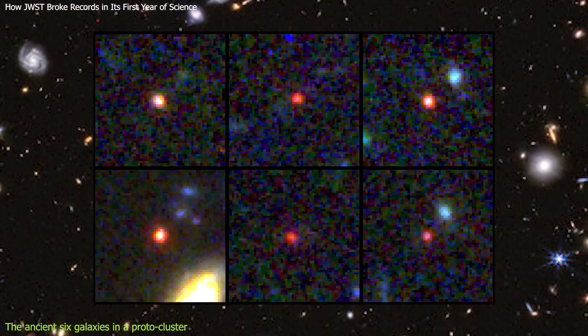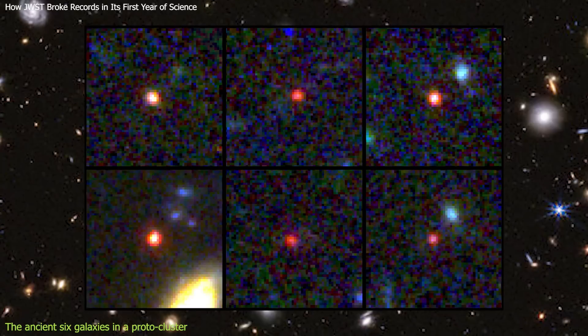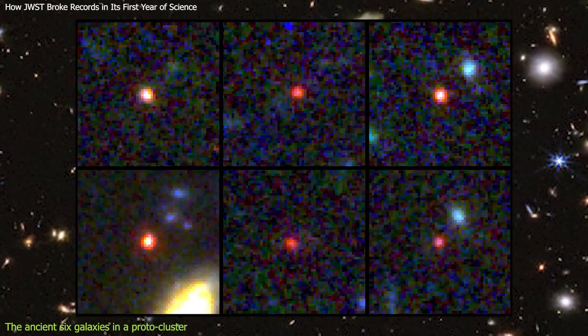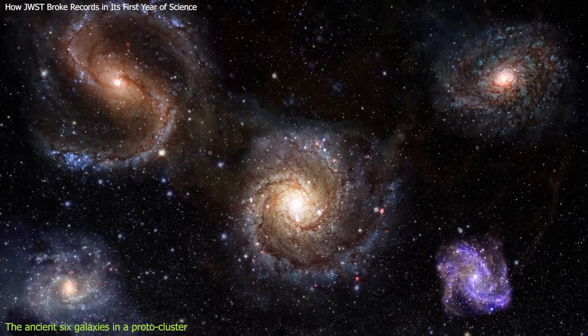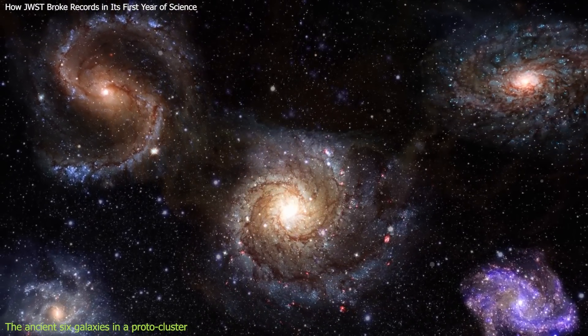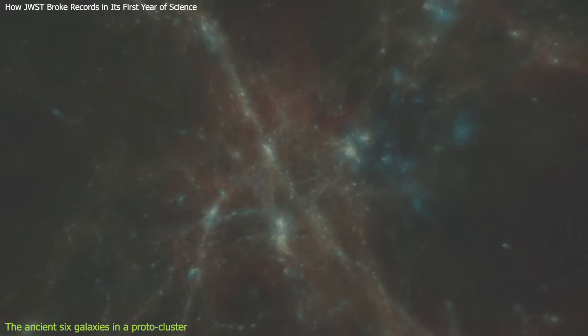But what is even more surprising is that these galaxies are not isolated. They are part of a larger structure that spans about 160 million light-years across. This structure is a protocluster, or a precursor to a galaxy cluster, which is one of the most massive and dense objects in the universe. Protoclusters are rare and hard to find in the early universe, as they require large amounts of matter and time to assemble.